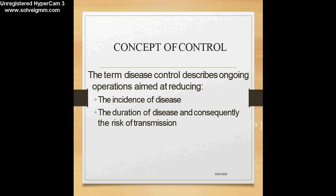The second aspect is reduction in the duration of the disease and ultimately the risk of transmission. This means that if a person who is suffering from a disease is treated, the duration of his suffering or symptoms automatically gets reduced, and by this we are able to achieve interruption of transmission — the risk of the agent being transmitted from that person to a susceptible host is taken care of.